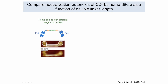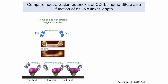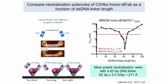In our experiment, we compare neutralization potencies of a homo-difab — the same Fab on both sides of a piece of double-stranded DNA — and vary the length of the double-stranded DNA while measuring neutralization potencies. If the linker is too short, only one Fab binds; too long, only one Fab binds; just right, two bind. We test neutralization potency in a pseudovirus neutralization assay and expect to see avidity effects reflected as increased potency.